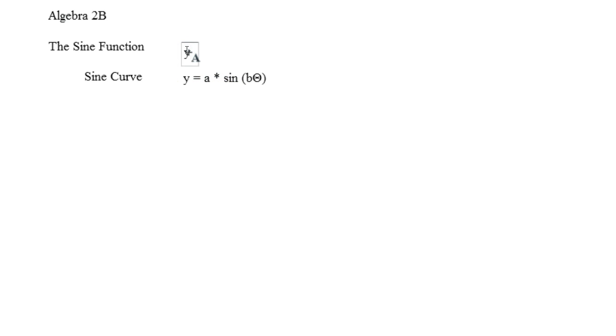So originally, and this is the parent graph, this would be y equals sine of theta. Now we've added two variables. A, well it's actually going to be the absolute value of A, is going to be the amplitude.